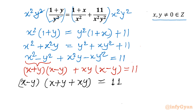Now, 11 is a prime number, so I can factorize 11 very easily. The factor pairs are: 1 times 11, or 11 times 1, or negative 1 times negative 11, or negative 11 times negative 1. These are the four cases we have to solve, one by one.